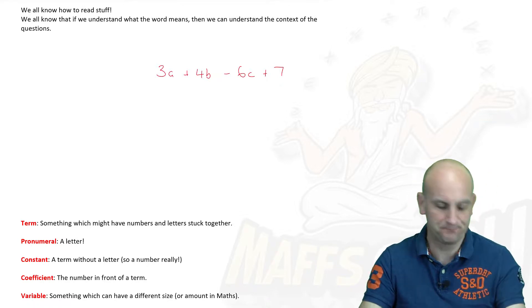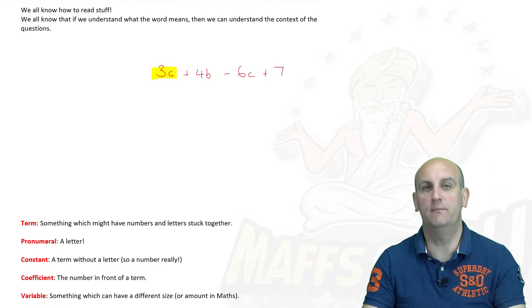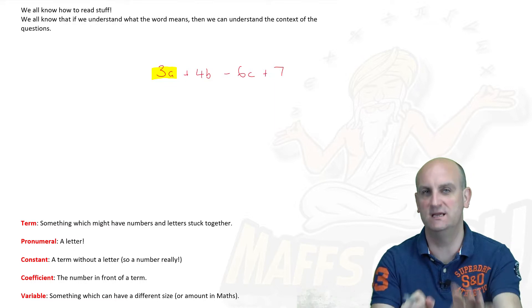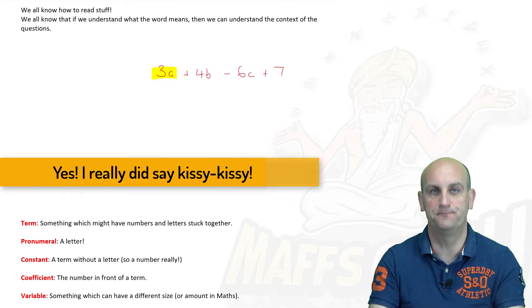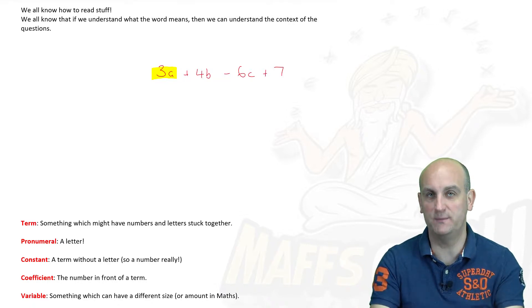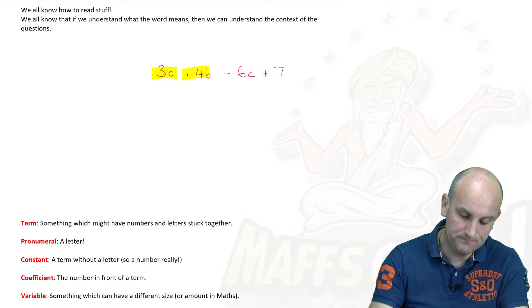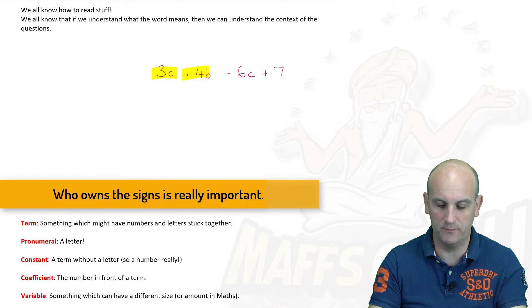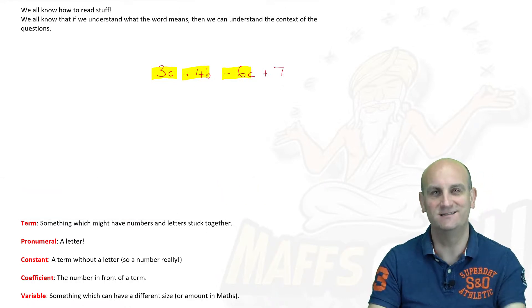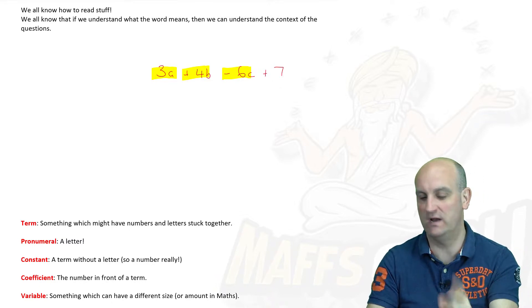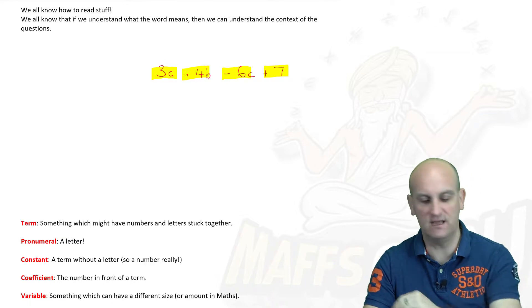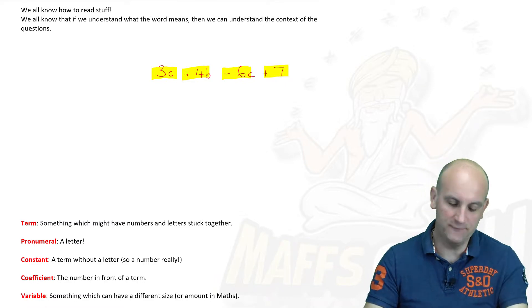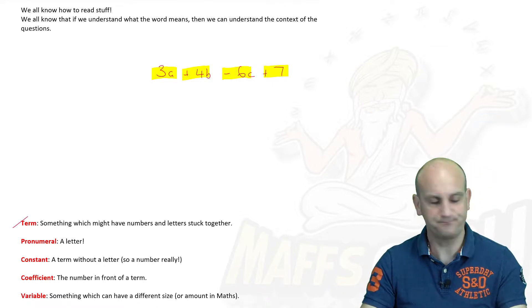First confusing word, term. I'm going to tell you that this here is a term. That 3a is a term. A number and a letter or a number and a group of letters that are all stuck together with kissy kisses, we'll come back to that in a moment, is a term. When we have a plus and a minus, it then stops being a term and we move to the next term. This plus 4b is also a term. Notice I said the word plus 4b. Very important. That plus belongs to the 4b. Minus 6c. Notice again, minus 6c. Very important. And here is my next term, plus 7. How many terms have I highlighted? I've highlighted four. And so there are in fact four terms there.